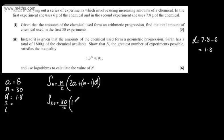We'll have 2 lots of A, 2 lots of A is going to give me 12. Then we'll have N minus 1, and that's going to be 29, multiplied by the common difference of 1.8. So, all I'm going to do is simply put this through a calculator and find the answer.